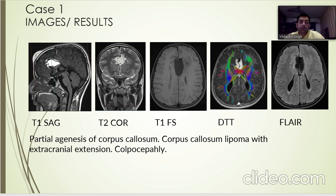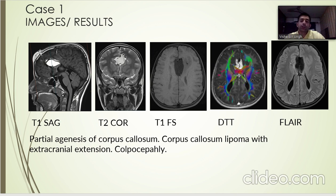The lesion is causing posterior displacement of the association fibers and we can see on FLAIR that there is ventriculomegaly. The corpus callosum on T1 sagittal is not well visualized — we can only see the genu, and the body, isthmus, and splenium cannot be visualized. We can see multiple linear hyperintensities extending from the lipoma through a small bony defect in the frontal bone to the subcutaneous plane, which shows another T1 weighted hyperintense lipoma. This represents a partial agenesis of the corpus callosum with extracranial extension, and we see corpus cephali.